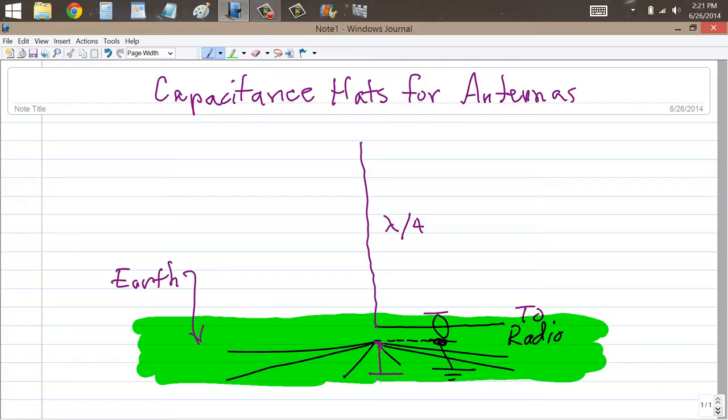The ground rod should be driven into the earth at the feed point and then the radial wires running out from there for at least a quarter of a wavelength. You can bury them or lay them on the surface, although I don't recommend laying them on the surface. So you have a quarter wavelength vertical antenna.